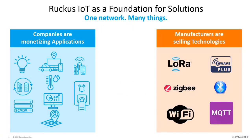When you look at IoT today, there are a lot of manufacturers selling different types of technology — things like LoRa, Zigbee, or Bluetooth — but these tend to be much more of a protocol and radio technology. Additionally, you have other companies developing solutions or applications that utilize some kind of data stream to graphically display or provide information about what's going on within the network.